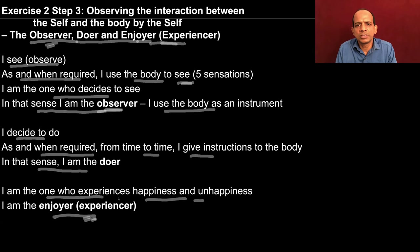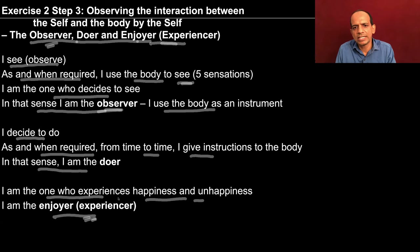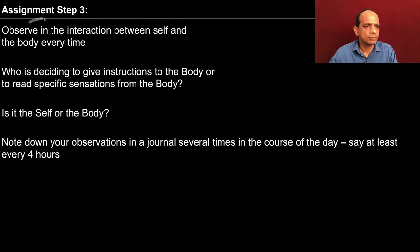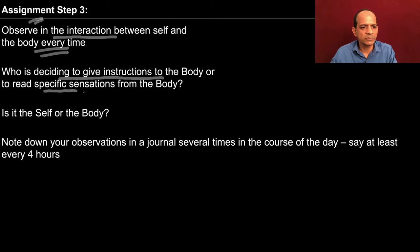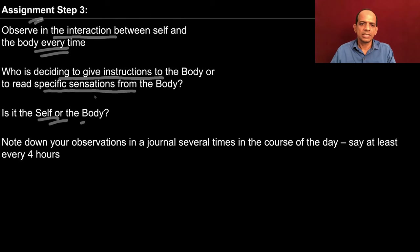So I am the one who observes and sees, I am the one who decides to do or not to do — I am the doer — and I am the enjoyer or experiencer. The assignment for step 3 is to observe the interaction between self and the body every time: who is deciding to give instruction to the body and to read specific sensations from the body — is it the self or the body? Now you are going to observe this on your own.